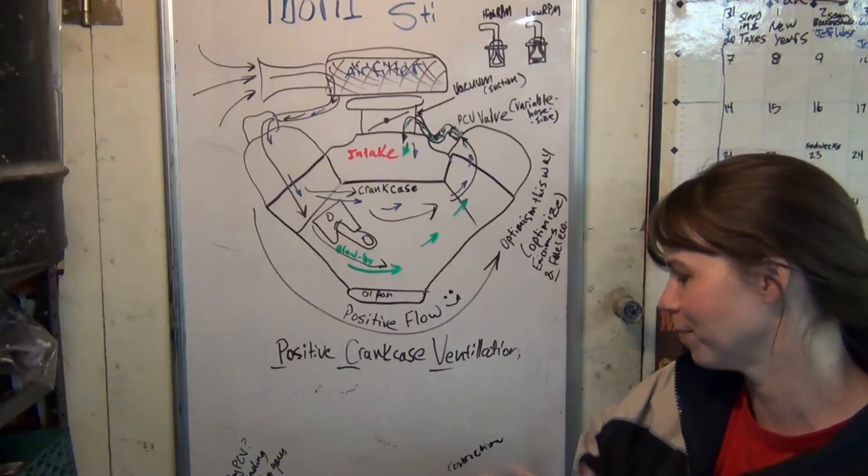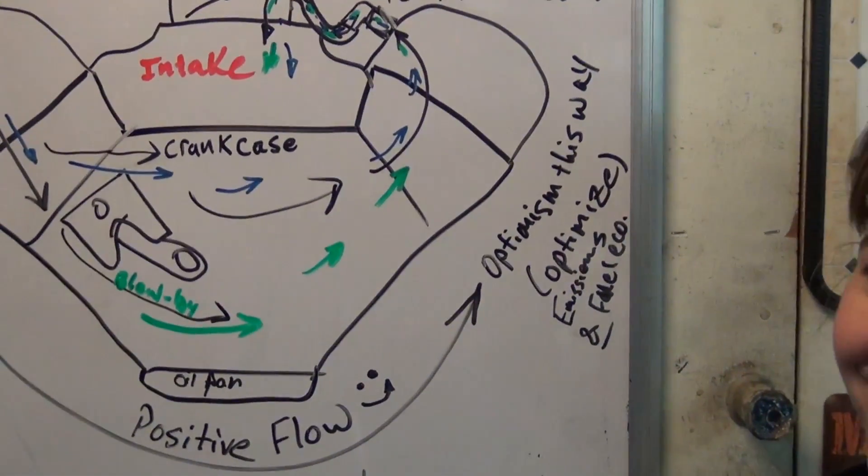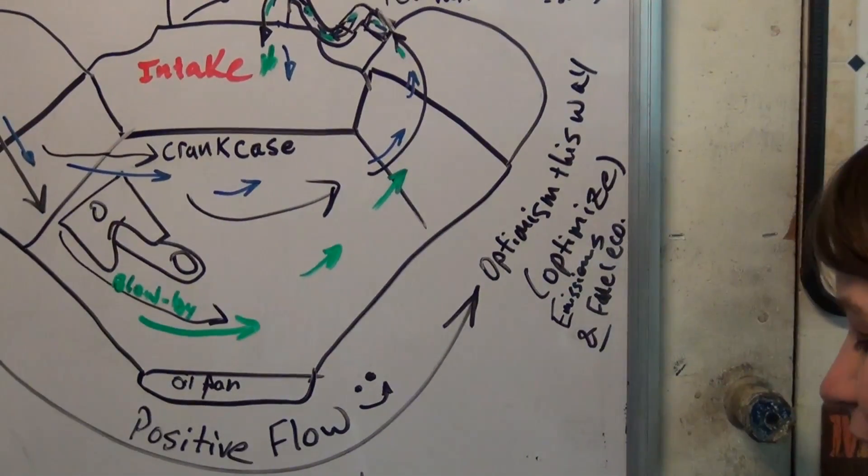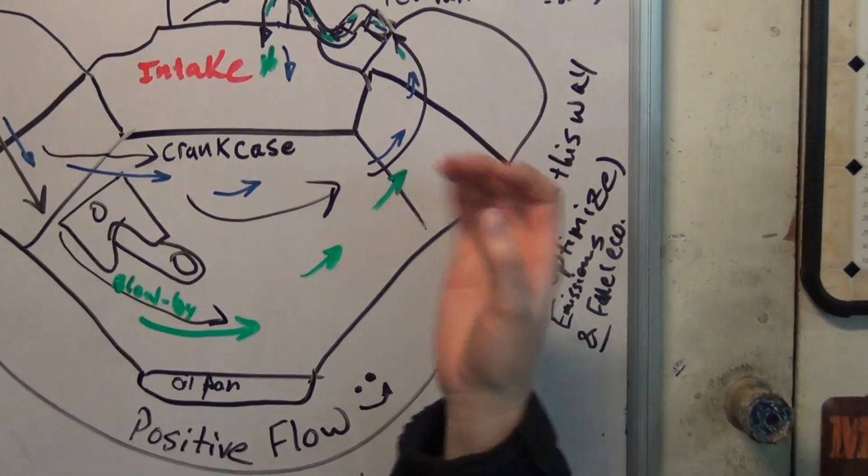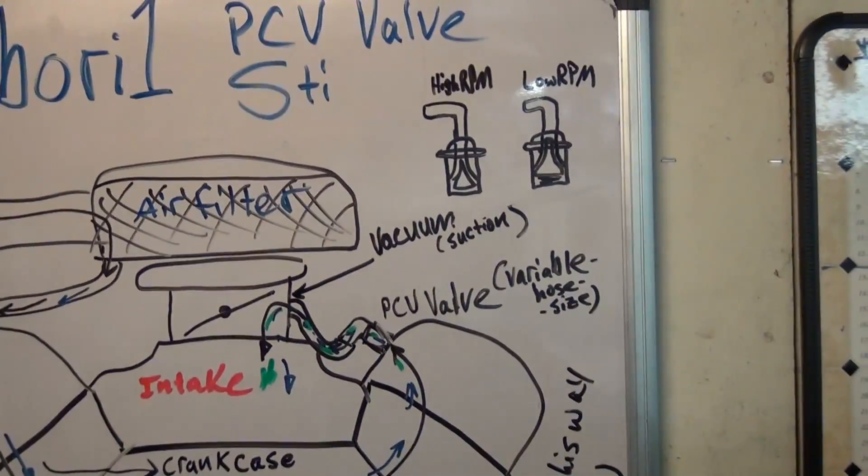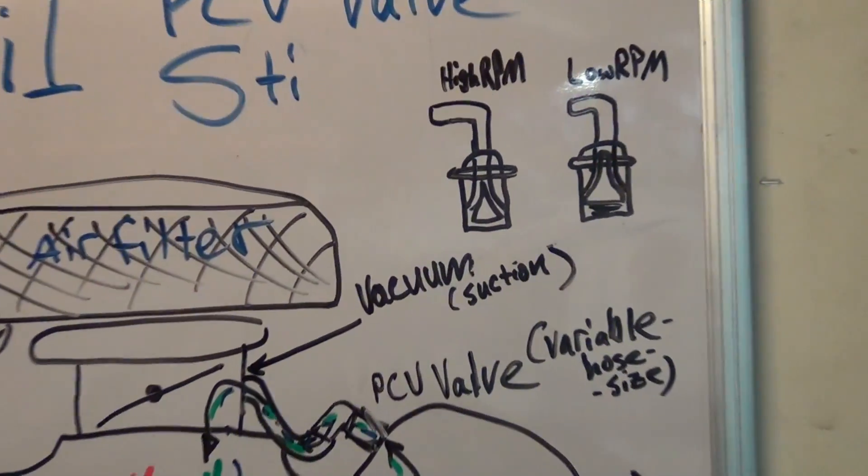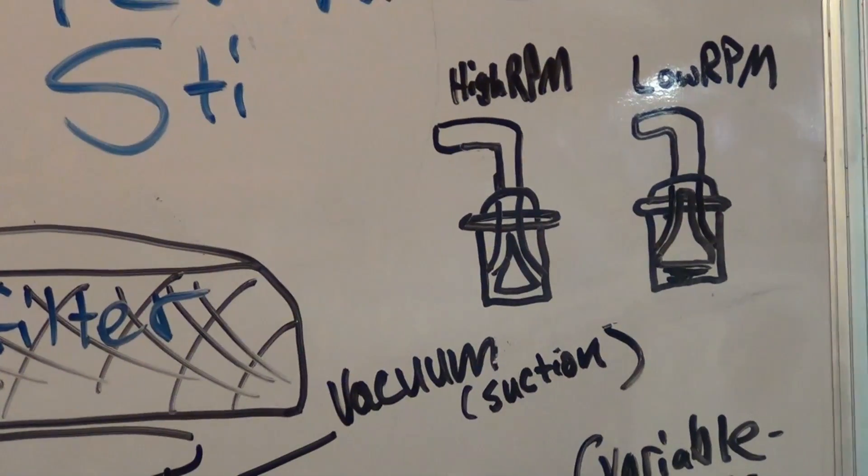Better fuel economy, better gas mileage. Oh, that's the same thing. But anyway, the PCV valve actually has a restriction in it. When you're idling it's more closed, and then when you're going highway speeds it's more open to compensate for the amount going by.